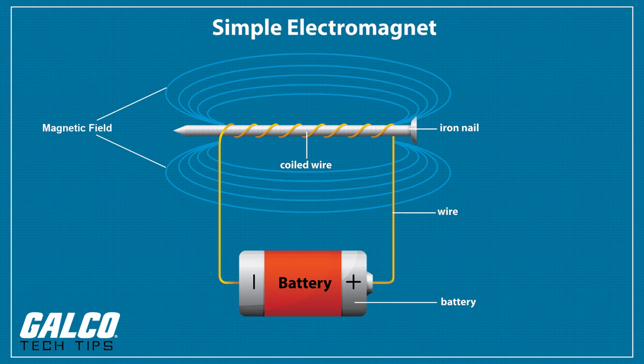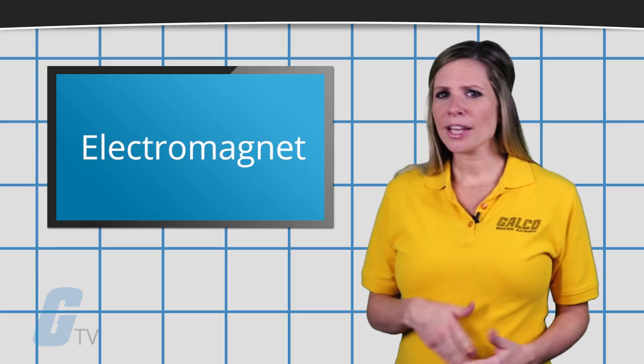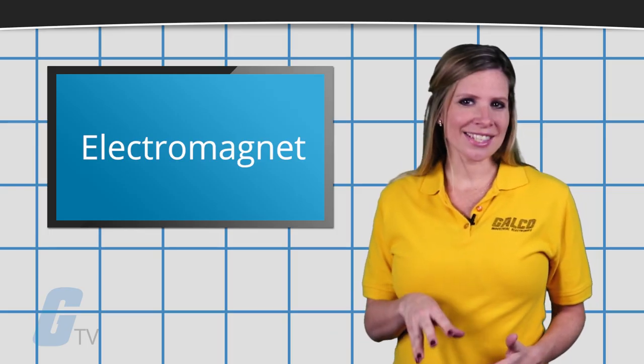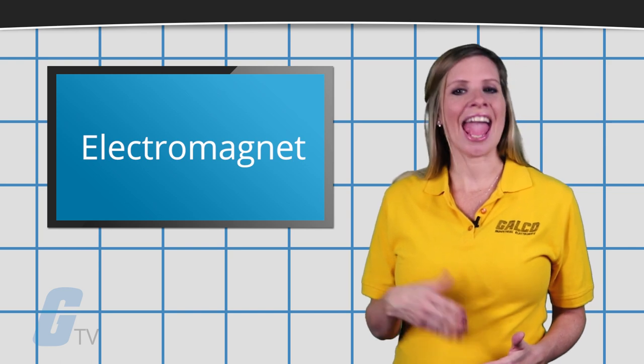The amount of magnetic field force generated by a coiled wire is proportional to the current through the wire multiplied by the number of turns or wraps of wire in the coil. By controlling the current, you can essentially turn the magnet on and off.